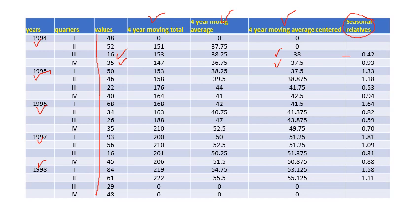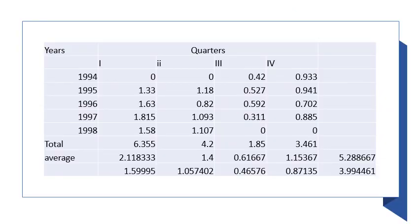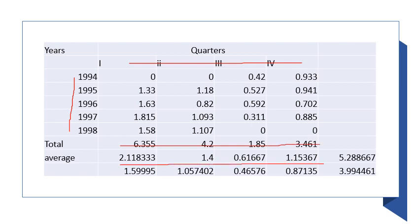Now these are called seasonal relatives. Now we have to arrange the data in years and quarters with these values, and we will have the seasonal relative table. Here I have arranged the years here and quarters in this line, and I obtained the total and the average. Now you can see that the total of these averages is not equal to 4, and we make seasonal adjustment.